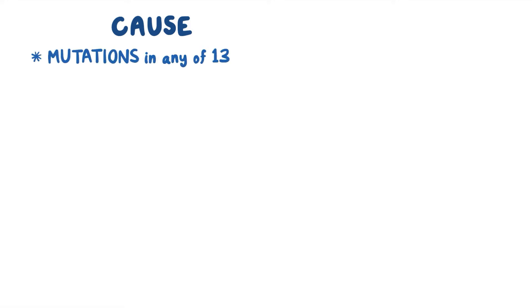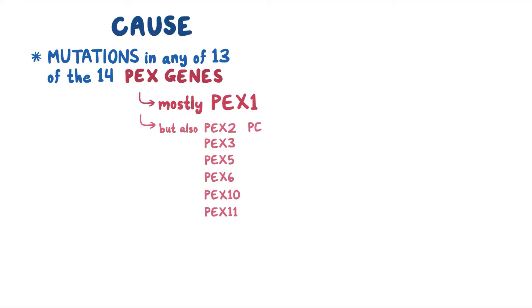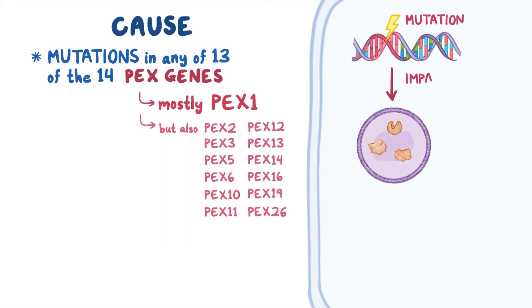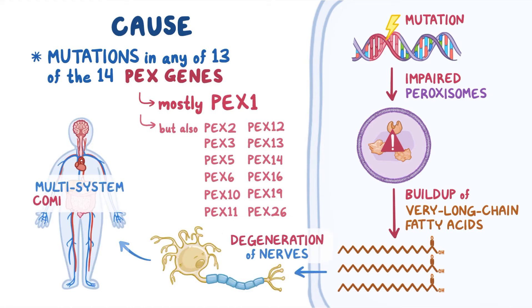ZSDs are genetic disorders caused by mutations in any 13 of the 14 PEX genes, which encode for peroxins, proteins involved in peroxisome assembly. Most children with ZSD have mutations in the PEX1 gene, though mutations can also occur in PEX2, PEX3, PEX5, PEX6, PEX10, PEX11, PEX12, PEX13, PEX14, PEX16, PEX19, and PEX26. These mutations impair the function of peroxisomes, leading to the buildup of very long chain fatty acids and degeneration of nerves that cause multi-system complications.